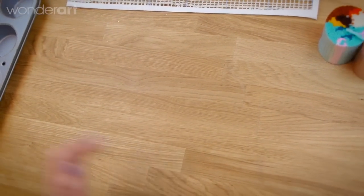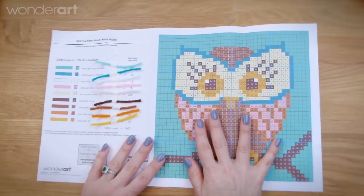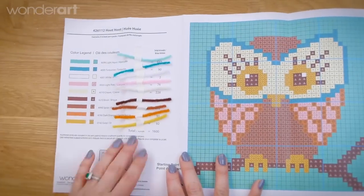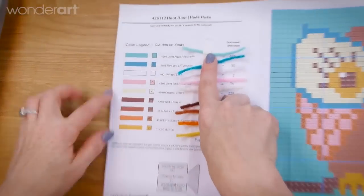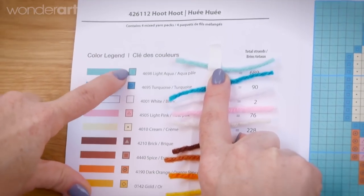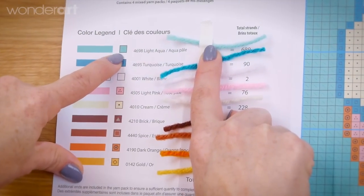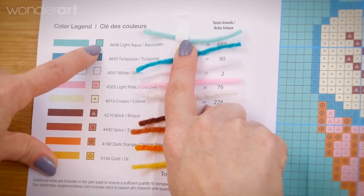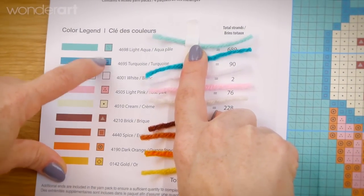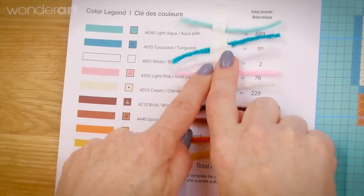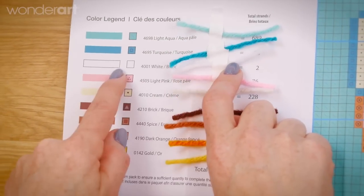Once you've separated all of your yarn you can take a look at your instructions. You've got full instructions which will show you how to do what I'm telling you, but also there's this color legend and we suggest that you take a strand of each color and match it up with the box. Every color has a little square, one square equals one knot on the grid, and then there's a little symbol to differentiate just in case the colors are close together. You want to match them up and tape it next just so there won't be any question.